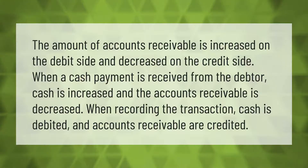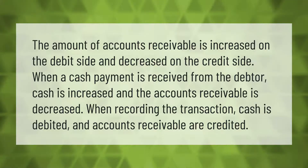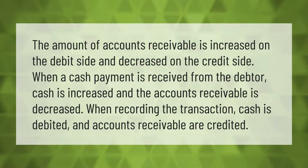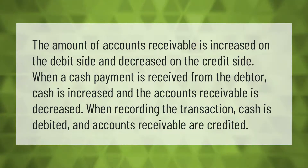The amount of accounts receivable is increased on the debit side and decreased on the credit side. When a cash payment is received from the debtor, cash is increased and accounts receivable is decreased. When recording the transaction, cash is debited and accounts receivable are credited.